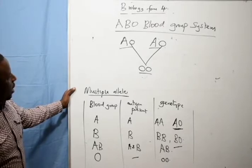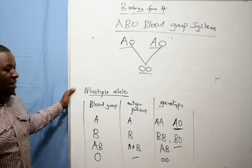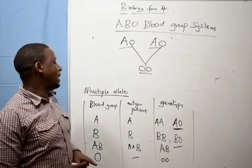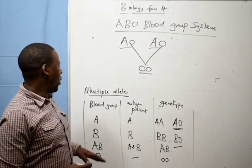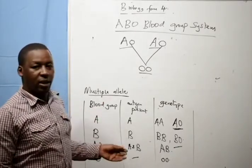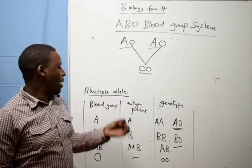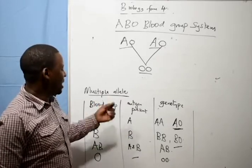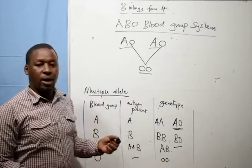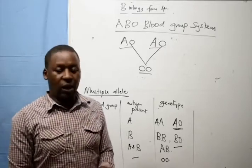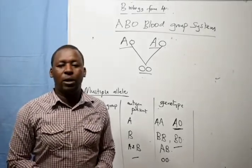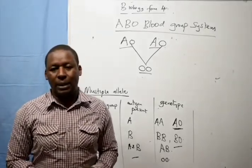I hope students you have understood the ABO blood group system, which is a case of multiple alleles where a characteristic is controlled by three major genes: A, B, and O. Hope you have enjoyed our lesson for today. We link up in our next lesson.